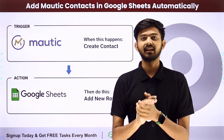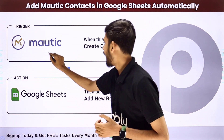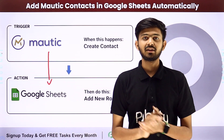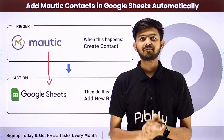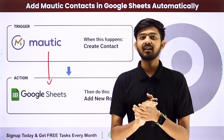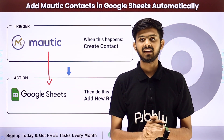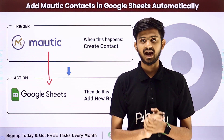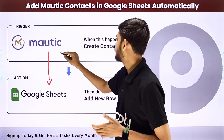For that, we are going to create an integration between Motech and Google Sheets. For creating this integration, we are going to use Pabbly Connect. Pabbly Connect is an amazing software for automation and integration. In Pabbly Connect, we are going to use triggers and actions.